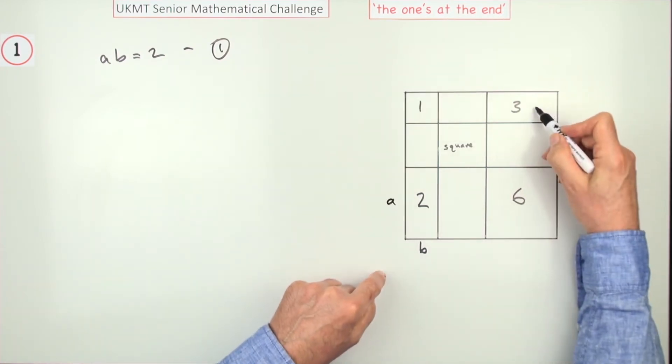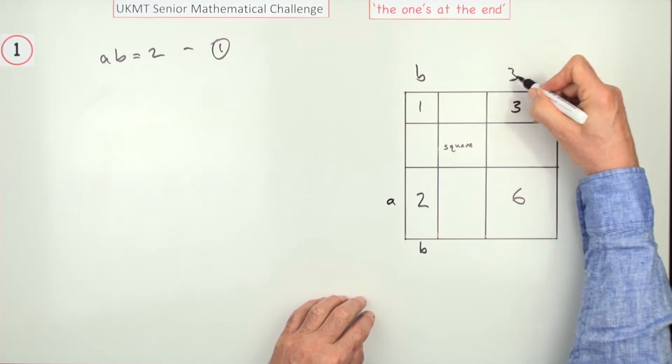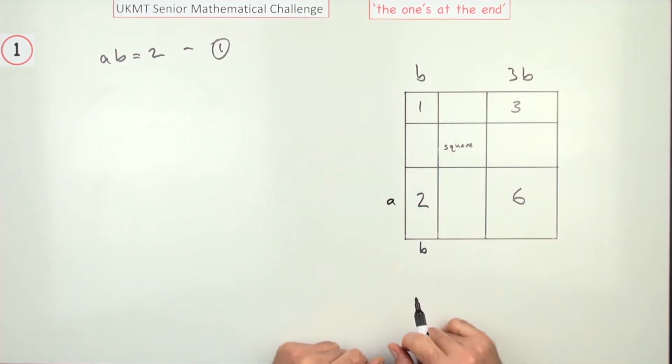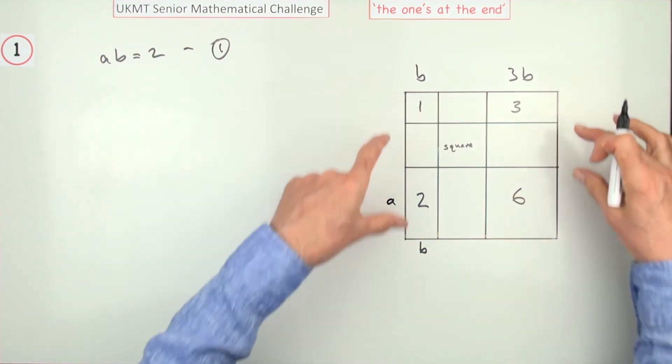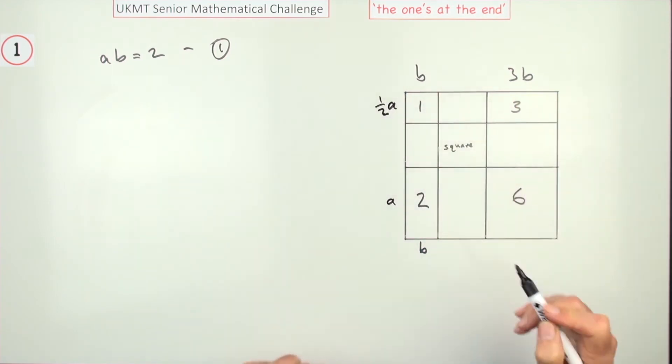So from here, this width must be 3 times that width, so if that's b, that's going to be 3b. And going up the way, put it down here instead, and going up the way, that height must be half of that height, so that must be a half of a.